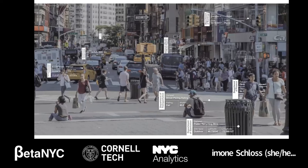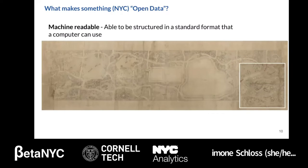Today, public data is available for nearly every facet of daily life. This illustration shows how the physical environment maps to some of New York City's open data — for every paved street, recycling bin, parking ticket, or restaurant inspection, there's a data point. So what kind of information can be open data? For starters, it must be machine readable — structured in a standardized format with rows and columns that a computer can use.